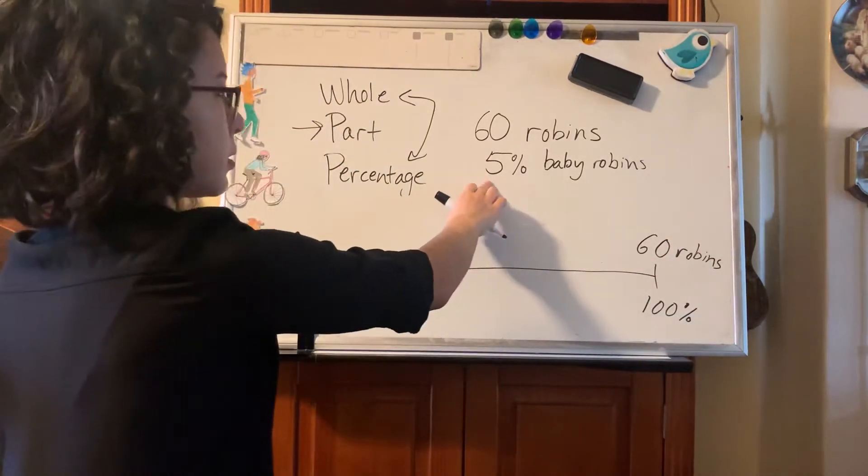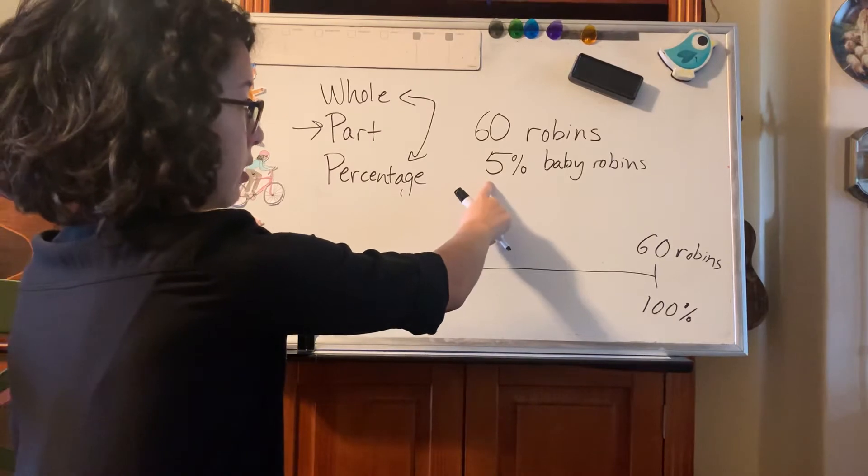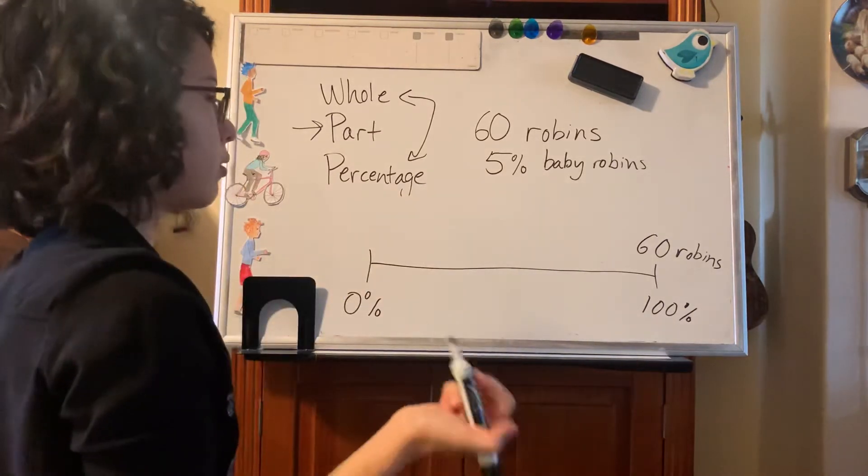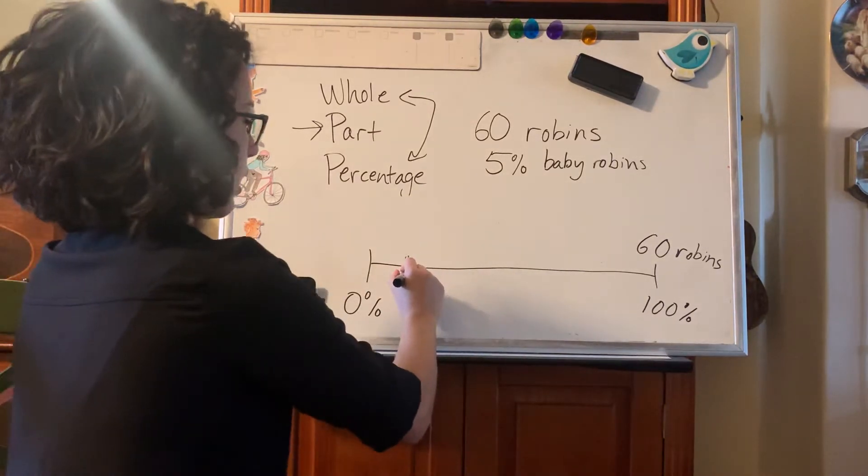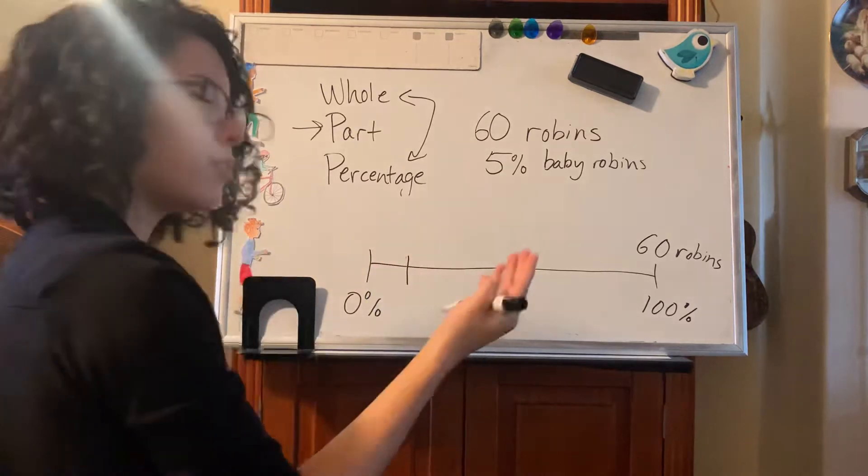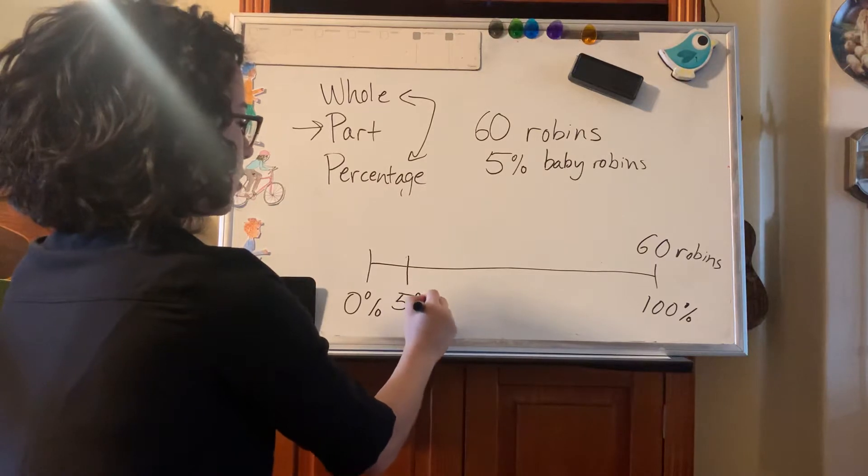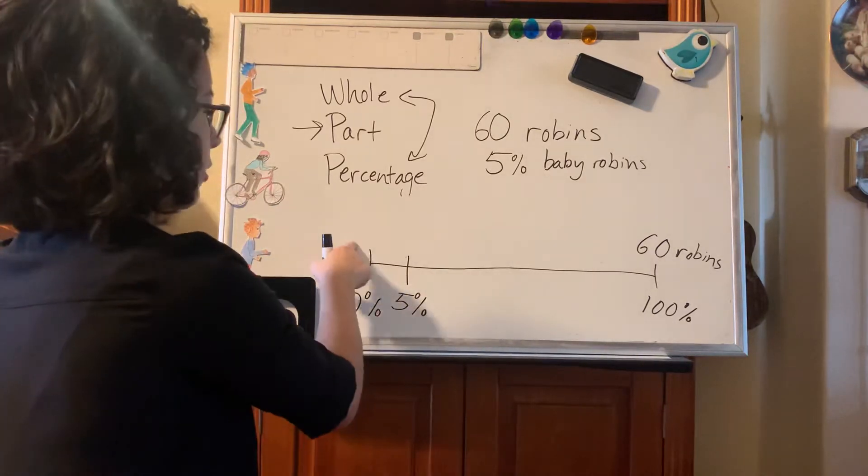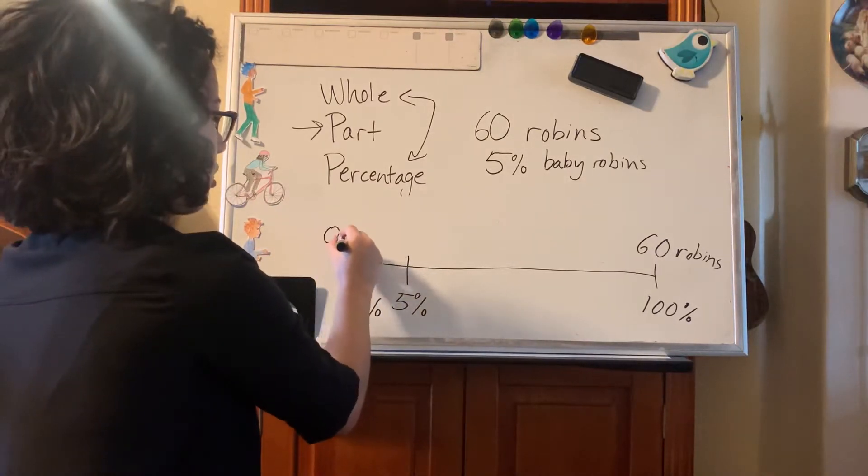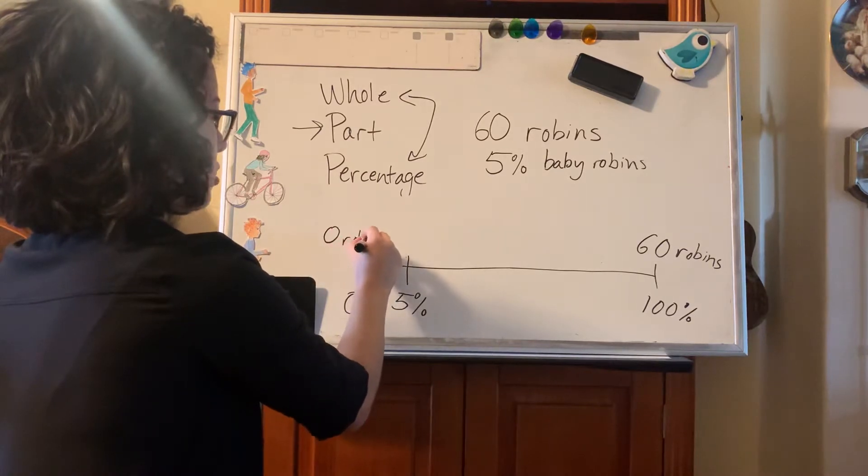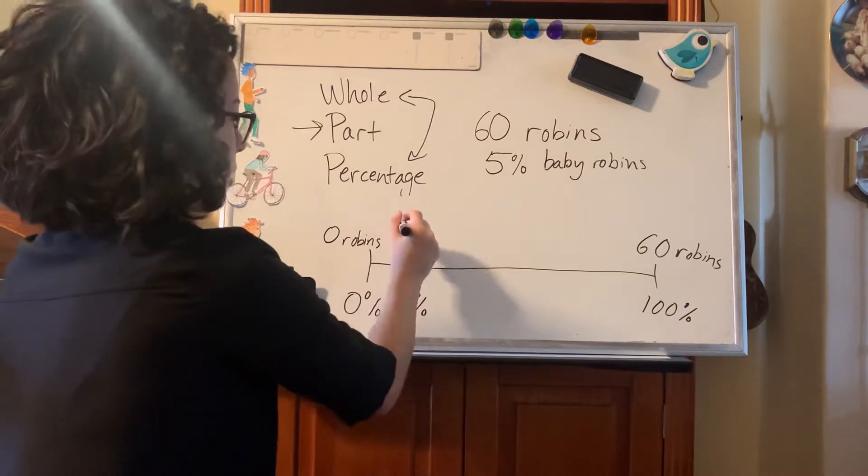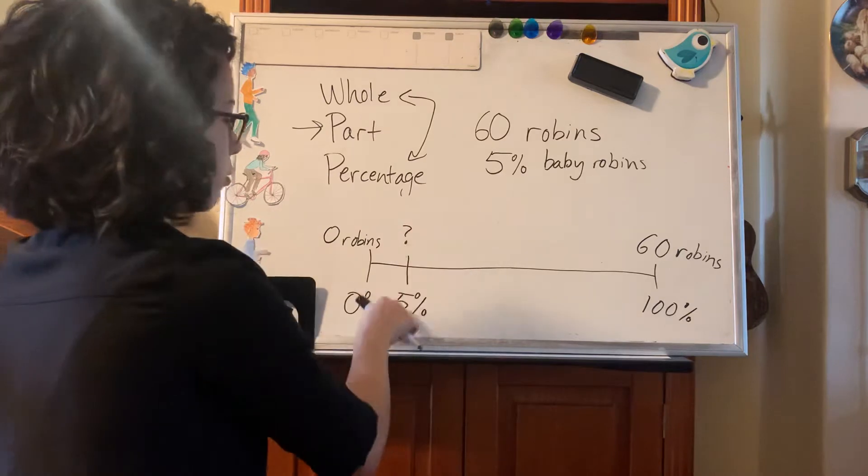And then do we know our percent? Yes, we have our percentage here. Five percent of them are baby robins. So let's just put that down. We're going to estimate. Five percent is like very low of a percent. We're going to put it very far to the left. Five percent are baby robins. So now what we're trying to find is, whoops, I forgot to fill out a piece of information here. The starting point is zero robins. What we're trying to find is how many robins is equal to five percent.